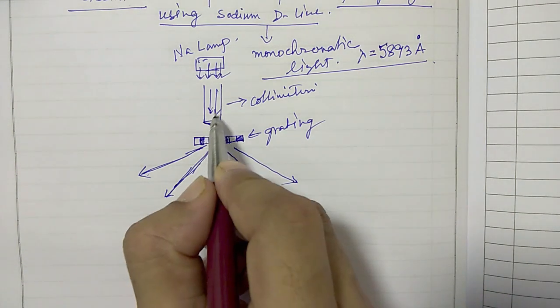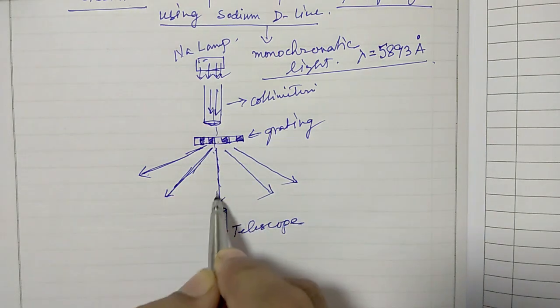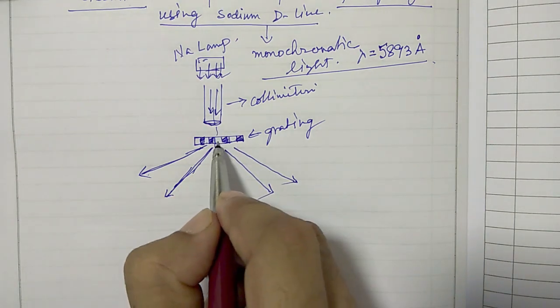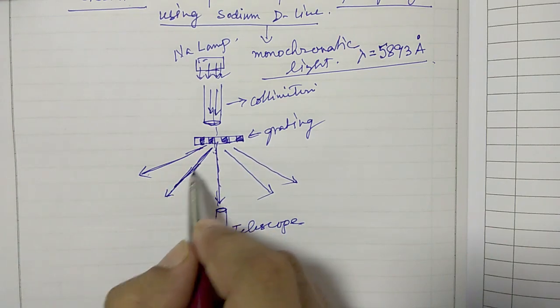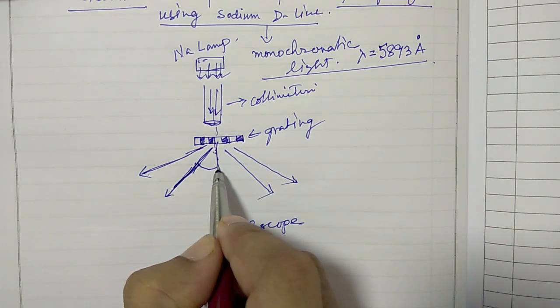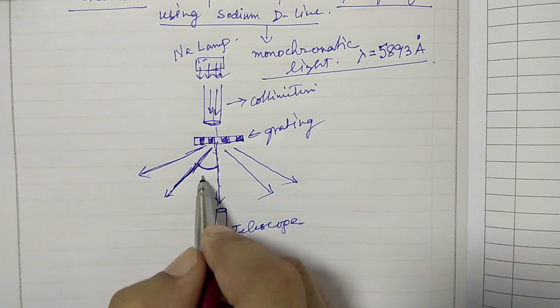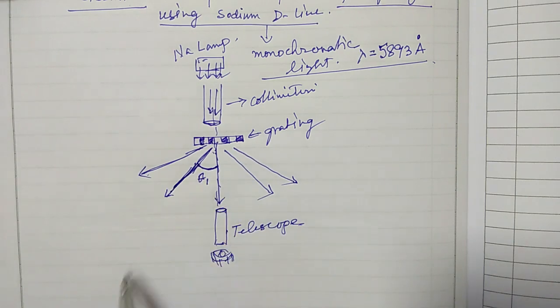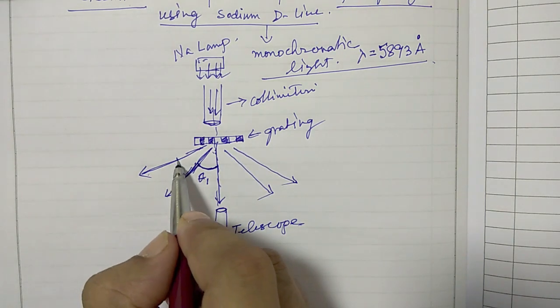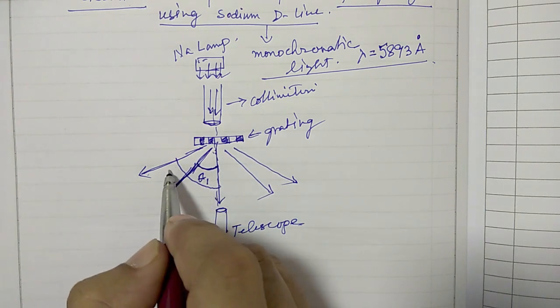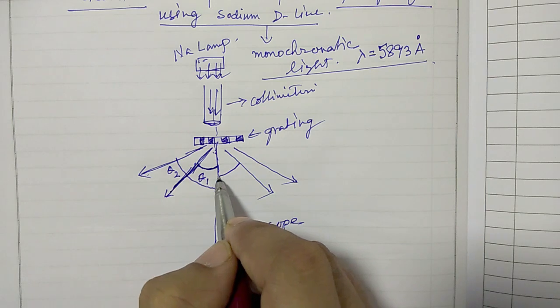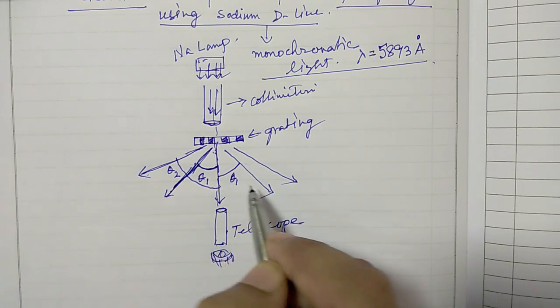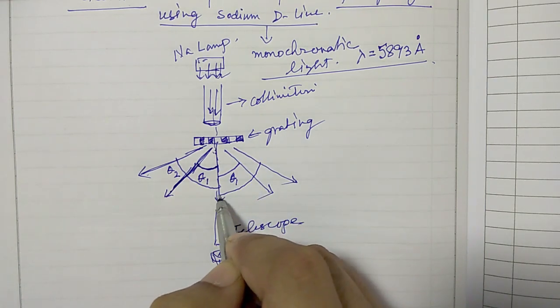You can see that if this is your zero, then you have one light which is coming at an angle, let's say this is theta 1, another light which is coming at an angle theta 2. Similarly, it is going to be theta 1, theta 2, they are symmetric.